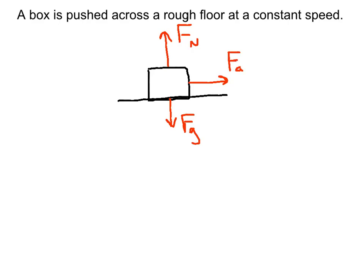So we'll say force applied. You can call it force push if you want. It doesn't really matter. And then back the other way, because it's a rough floor, we have force of friction. And acceleration equals zero because we're at a constant speed. So to write our net force equations, in the x direction, let's say to the right is positive, to the left is negative. You get to choose when acceleration is zero.